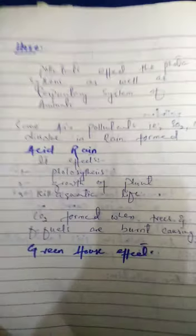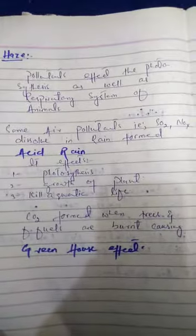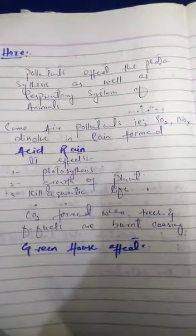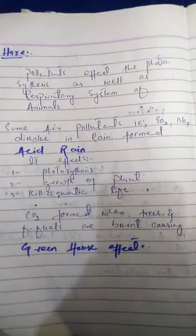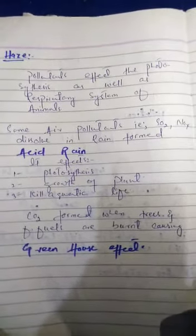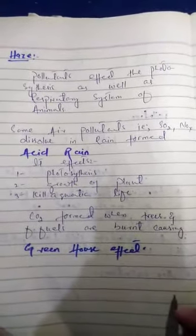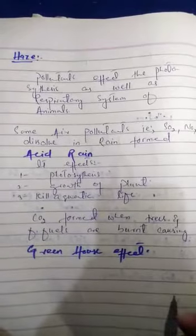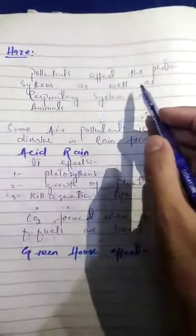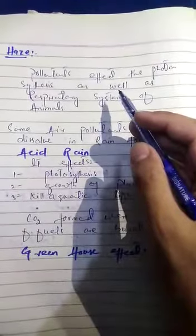Just because of haze or smoke, the pollutants affect the photosynthesis. The pollutant may affect photosynthesis as well as the respiratory system of a human being or any animal. We are talking about air pollution. Some air pollutants such as sulfur dioxide and oxides of nitrogen...